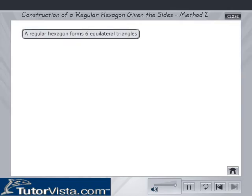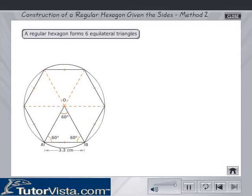Method 2: In this method, we construct the regular hexagon, making use of the fact that it is made up of six equilateral triangles.